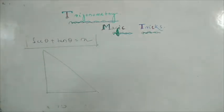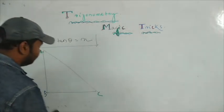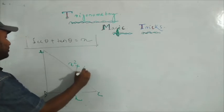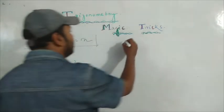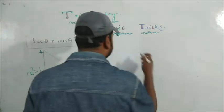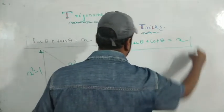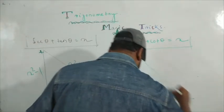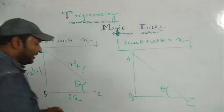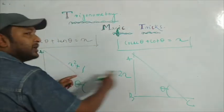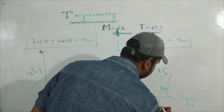How do you work with sin θ + tan θ equal to x? This will be triangle ABC. The hypotenuse will be x² + 1, the base will be x² − 1, and the perpendicular will be 2x. This angle is theta. This is the shortcut method — the magic trick.